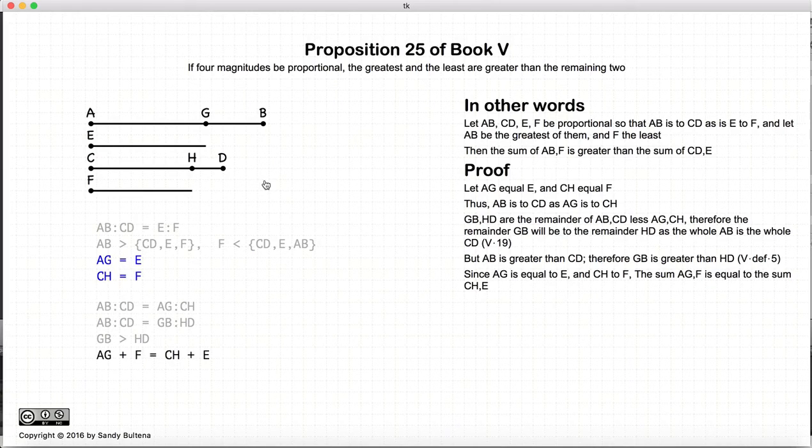Changing tack a little bit for a moment, E plus F is equal to E plus F. I think everybody can agree to that. However, E is equal to AG, so let's substitute E plus F for AG plus F. E plus F, well F is equal to CH, so let's replace E plus F with CH plus E. So this equation right here is basically saying that E plus F equals E plus F. I think everybody can agree that that's true.